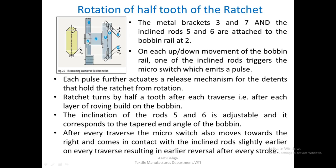The micro switch moves towards the right after every traverse. Every time during the upward and downward movement of the bobbin rail, the inclined rod comes in touch with the micro switch slightly earlier than the previous layer. Therefore the reversal that results takes place earlier — every time the lift is shortened and reversal takes place earlier, after every stroke.